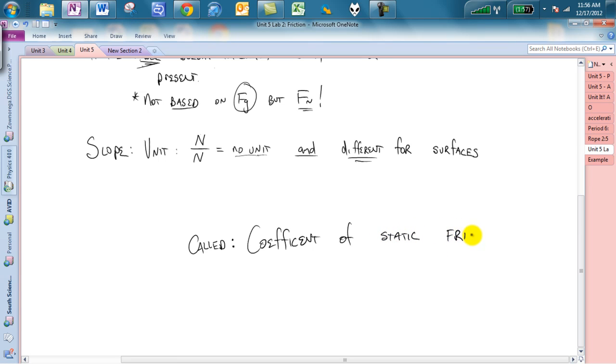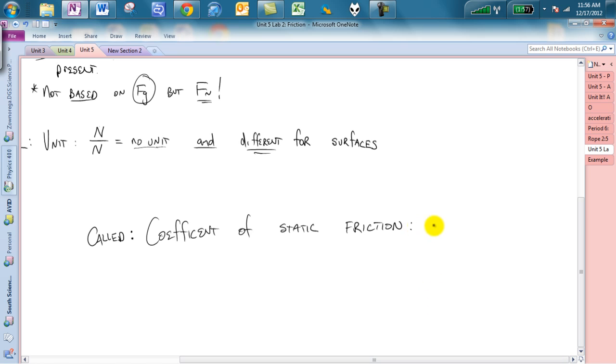So, we will have one coefficient of static friction, which we will represent as what they have, a mu s, s standing for static, and you will see a mu is actually a u with a tail on the front. It kind of looks like an m, but I want you to draw it more like a u, so mu sub s. In this case, we also have another slope on here, which we will call the coefficient of kinetic friction. This is moving friction, and you will see that this will be mu sub k, mu k.